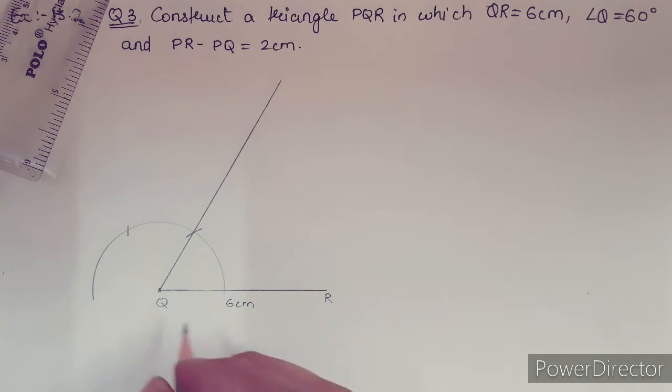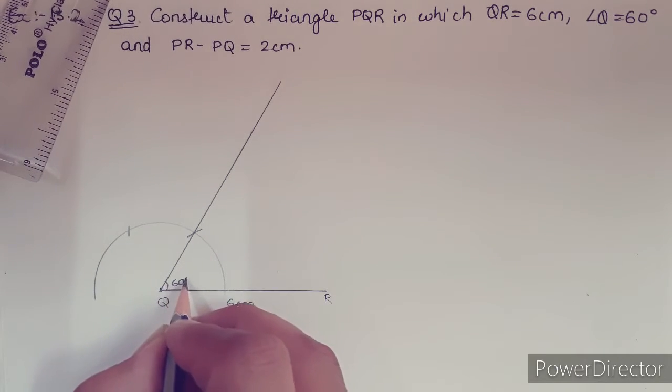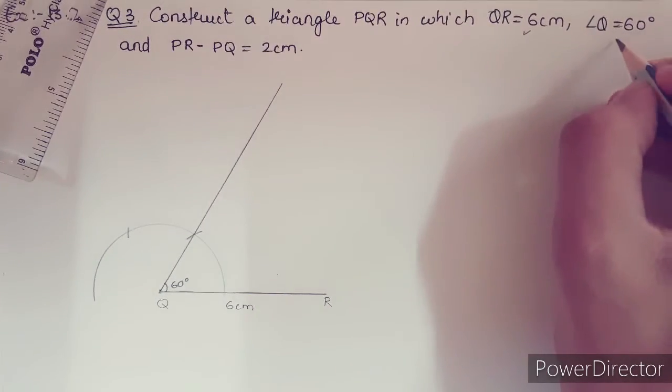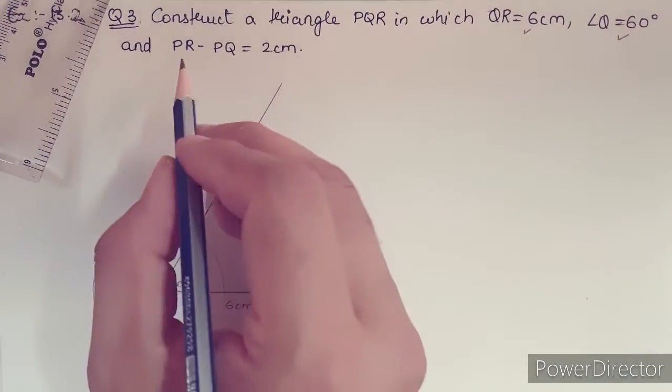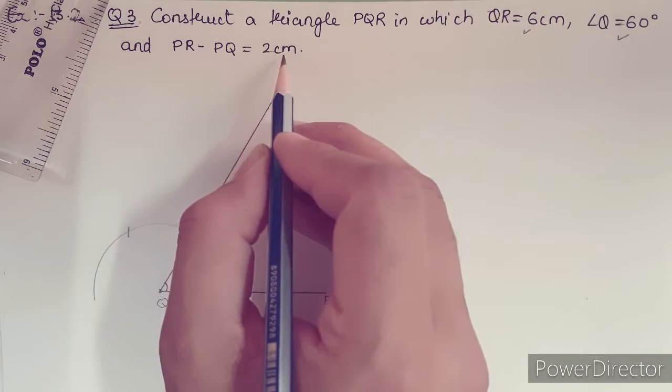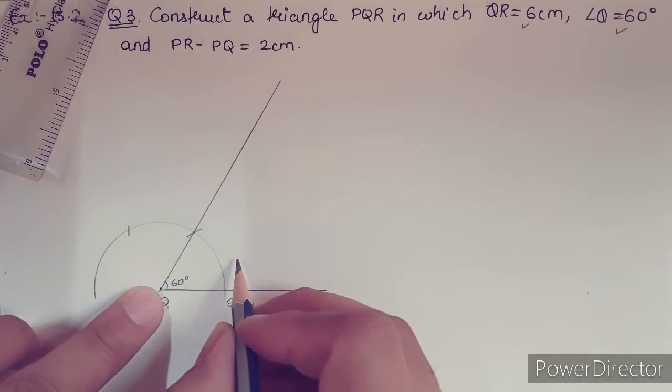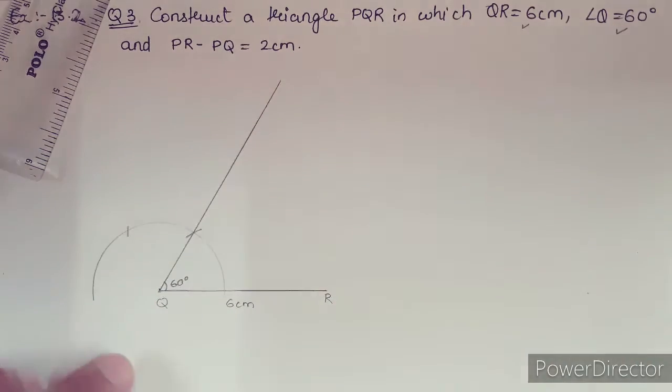So this is 60 degrees. We have completed this, and now we need to take care of PR minus PQ equals 2 cm. This is type 3 question wherein the opposite side is bigger.